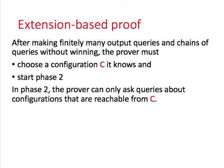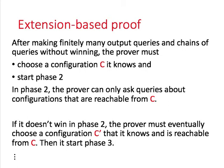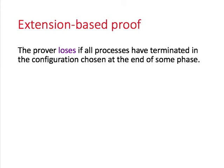After making finitely many output queries and chains of queries without winning, the prover must choose a configuration c it knows and start phase 2. Phase 2 is the same as phase 1, except the prover can only ask queries about configurations reachable from c. If the prover doesn't win in phase 2, it must eventually choose another configuration — committing to an extension of the extension it committed to at the end of phase 1. Then it starts phase 3. This keeps happening until all processes have output values and terminated, in which case the prover loses.